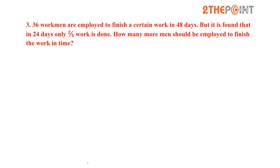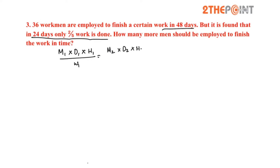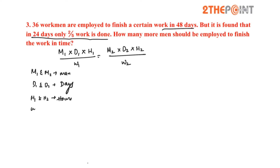36 workmen were employed to finish a certain work in 48 days. But it is found that in 24 days only two-fifths of the work is done. How many more men should be employed to finish the work in time? To solve this problem, use the formula: M1 × D1 × H1 / W1 = M2 × D2 × H2 / W2, where M represents workmen, D represents total days, H represents hours worked, and W represents total work done.